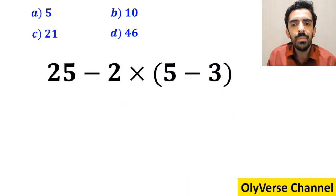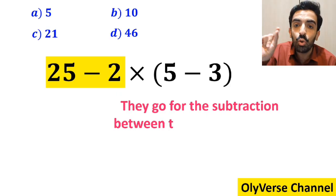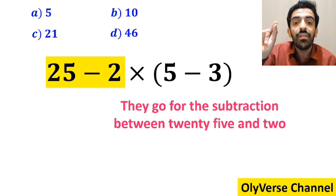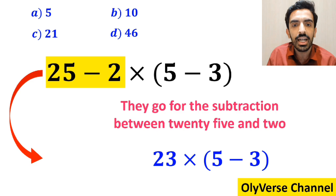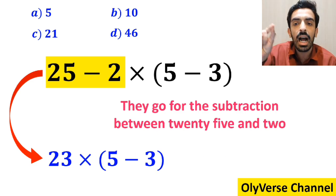In the next step, they go for the subtraction between 25 and 2, which I have highlighted in yellow, and instead of this expression, they write 23 times 5 minus 3 inside the parenthesis.